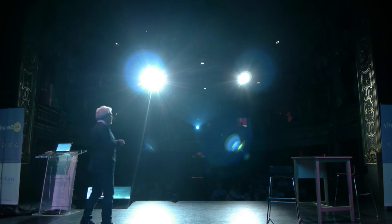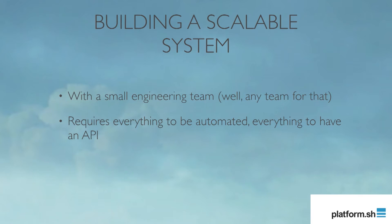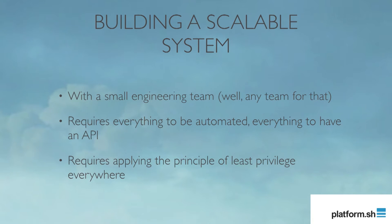This is the thing we're trying to avoid. When you build a scalable system with a small engineering team like ours — or even a huge one — you have to get to a point where everything has an API. Everything is automated, and you try to apply the principle of least privilege, so every process that is running has its own user, namespaced. It cannot be managed otherwise when you start to have tens of thousands or hundreds of thousands of processes running.